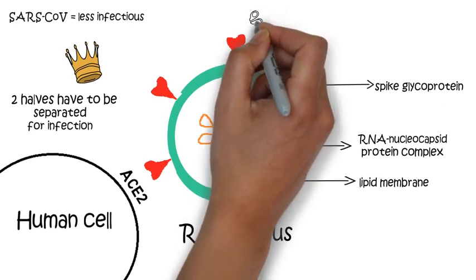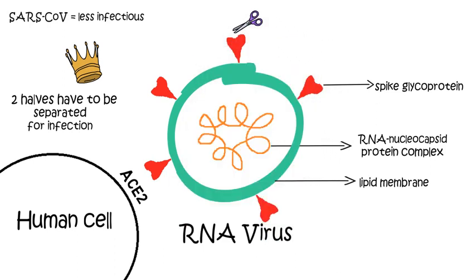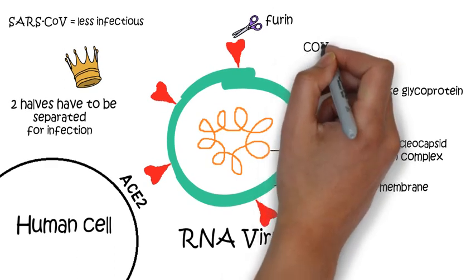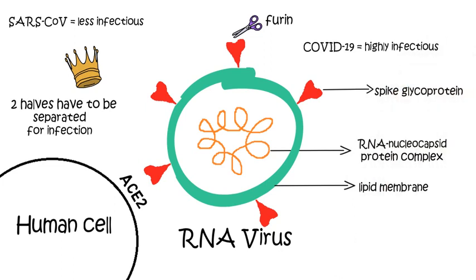However, in the new COVID-19 strain, the two halves are readily separated by the action of enzyme furin, which is abundantly present in human tissues. This makes the COVID-19 strain more infectious than the 2002 SARS virus.